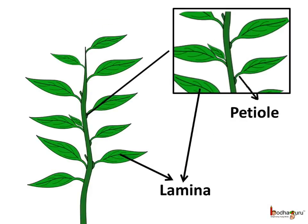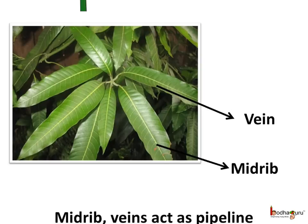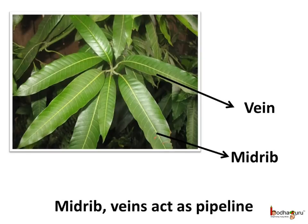A leaf rises from the node of the stem. The part of the leaf which is attached to the stem is the petiole. Each leaf has a broad, flat surface which is generally green in colour. It is called the leaf plate or the lamina. Look carefully, you would find patterns of lines on the lamina. These lines on the lamina of the leaf are called the veins. There is a thickest vein in the middle of the leaf — it is called the midrib.